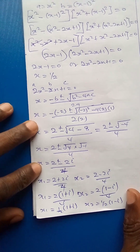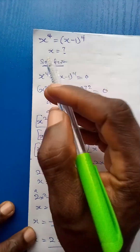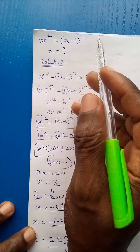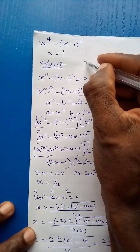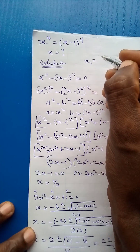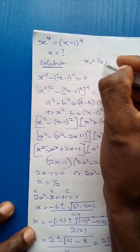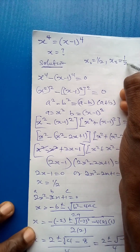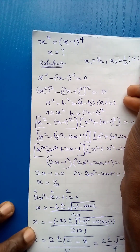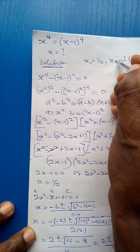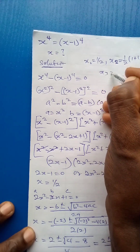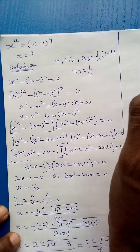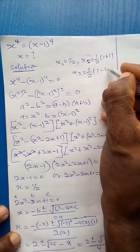So the solutions to the equation x to the power 4 equals x minus 1 to the power 4 are: x₁ equals 1 over 2, x₂ equals one half times 1 plus i, and x₃ equals one half times 1 minus i.